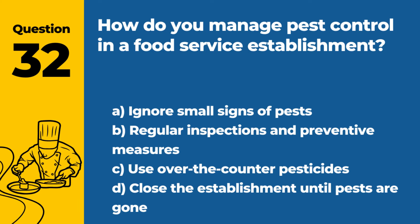Question 32. How do you manage pest control in a food service establishment? a. Ignore small signs of pests. b. Regular inspections and preventive measures. c. Use over-the-counter pesticides. d. Close the establishment until pests are gone. Answer b. Regular inspections and preventive measures. Managing pest control in a food service establishment involves regular inspections, preventive measures, and professional pest control services when needed.